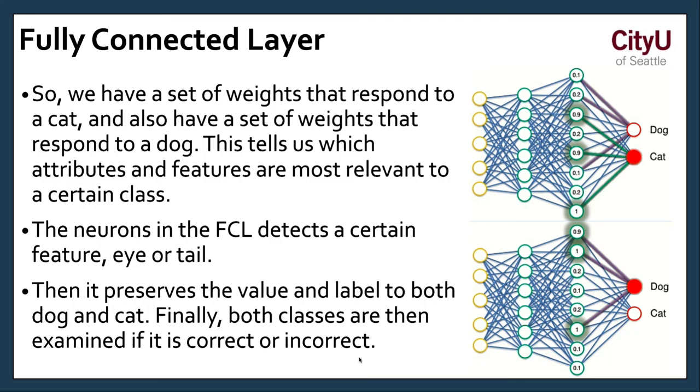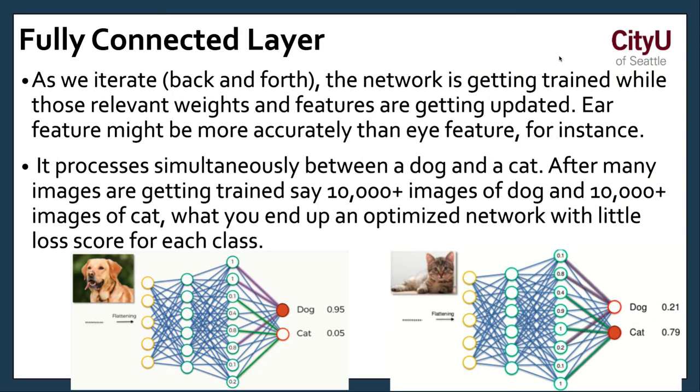Then it preserves the value and label to both the dog and a cat. Finally, both classes are then examined if it's correct or incorrect. By this time around, it is now knowing that, okay, if there's like a more circular eyes that is most likely a dog. And if the eyes is more like a line or an oblong, that is most likely a cat. And also the tail. If you would see the tail that just goes up straight or it has a different movement compared to dogs.